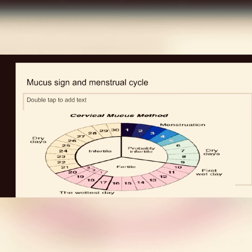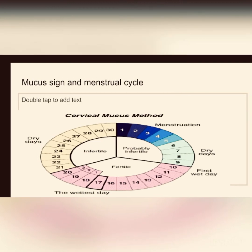After menses, there will be dryness — you are not seeing anything. It could be one, two, or three days of dryness, depending on the woman. Then following the dryness, there will be increasing wetness. The texture and degree of wetness will consistently increase until you reach the wettest day, then the wetness will start reducing until the person enters a dry period again, followed by a new cycle with the next menses.